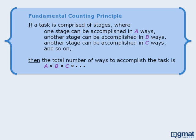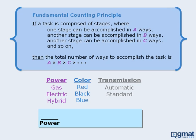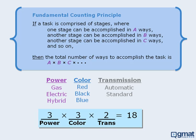So let's apply this principle to our question. Here we can take the task of building a car and break it into three stages. One stage is selecting the car's power source, another stage is selecting the car's color, and another stage is selecting the car's transmission. In how many ways can we select the power source? We can accomplish this stage in three ways. In how many ways can we choose a color? We can accomplish this stage in three ways as well. And finally, there are two ways in which we can accomplish the last stage. So applying the fundamental counting principle, the total number of ways to accomplish all three stages and build our car will be equal to the product of the number of ways to accomplish each stage. This product equals 18, so we can create 18 different cars.